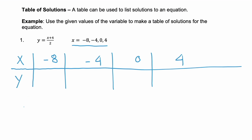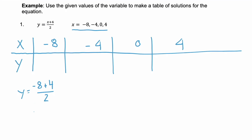For the first one, y equals (negative 8 + 4) / 2. Negative 8 plus 4 is negative 4, so we have negative 4 over 2, which simplifies to negative 2. So y here is negative 2. Notice that because we have an x and a y, this is actually the same as the point (negative 8, negative 2).